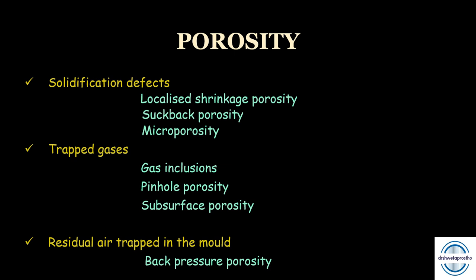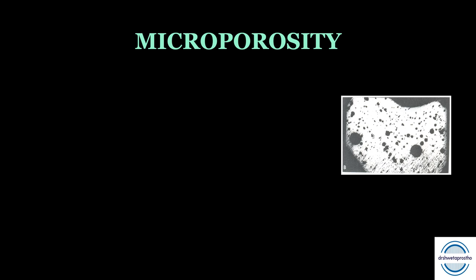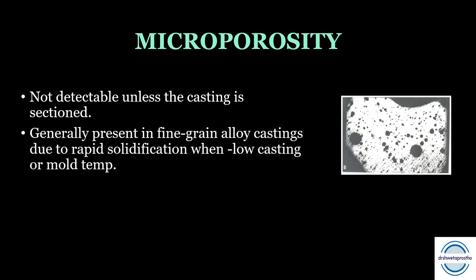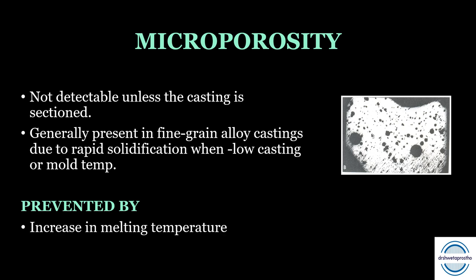Micro porosity consists of small irregular voids not detectable unless the casting is sectioned. They are mainly present in fine-grain alloy castings due to rapid solidification caused by low casting or mold temperature. Prevention involves increasing the melting temperature or increasing the mold temperature.